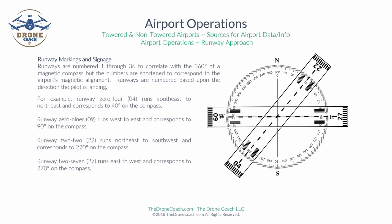Here we're going to review runway markings and signage. Runways are numbered 1 through 36 to correlate with the 360 degrees of a magnetic compass, but the numbers are shortened to correspond to the airport's magnetic alignment. Runways are numbered based upon the direction the pilot is landing. For example, runway 04 runs southeast to northeast and corresponds to 40 degrees on the compass, as you can see in the graph.